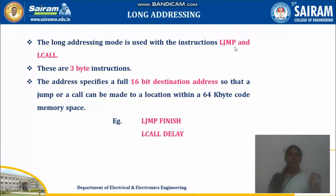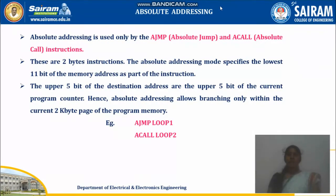Next is long addressing, used with LJMP and LCALL. Whatever label is specified after LJMP or LCALL, the full 16-bit address is used. When this instruction is executed, it automatically jumps to that label. In long addressing, the address specifies the complete 16-bit destination address, whereas in absolute addressing only the lowest 11 bits of the memory address are part of the instruction, and the upper 5 bits represent the destination address from the current program counter.